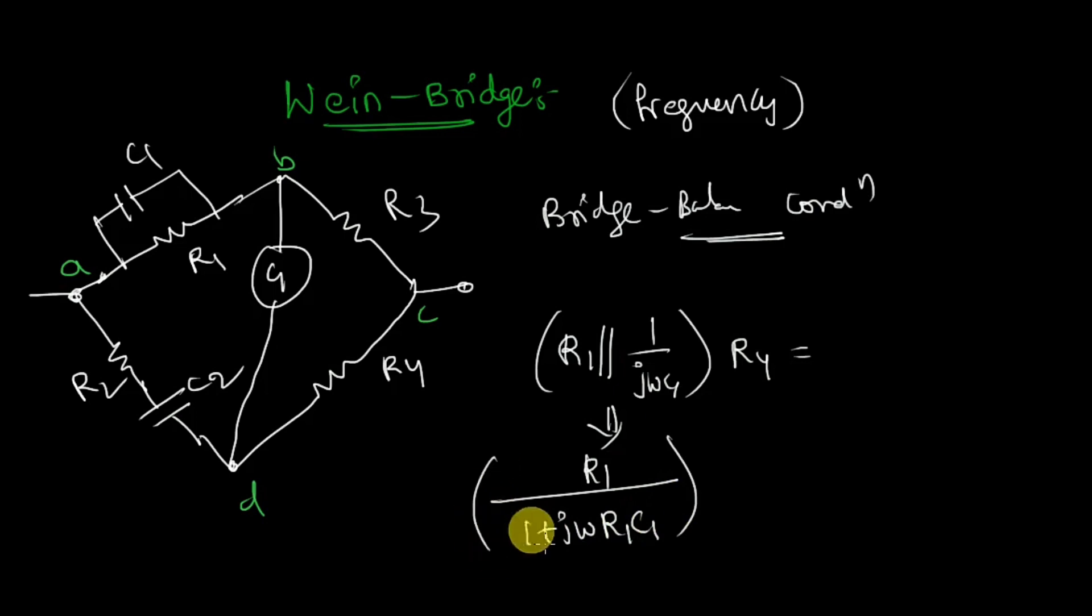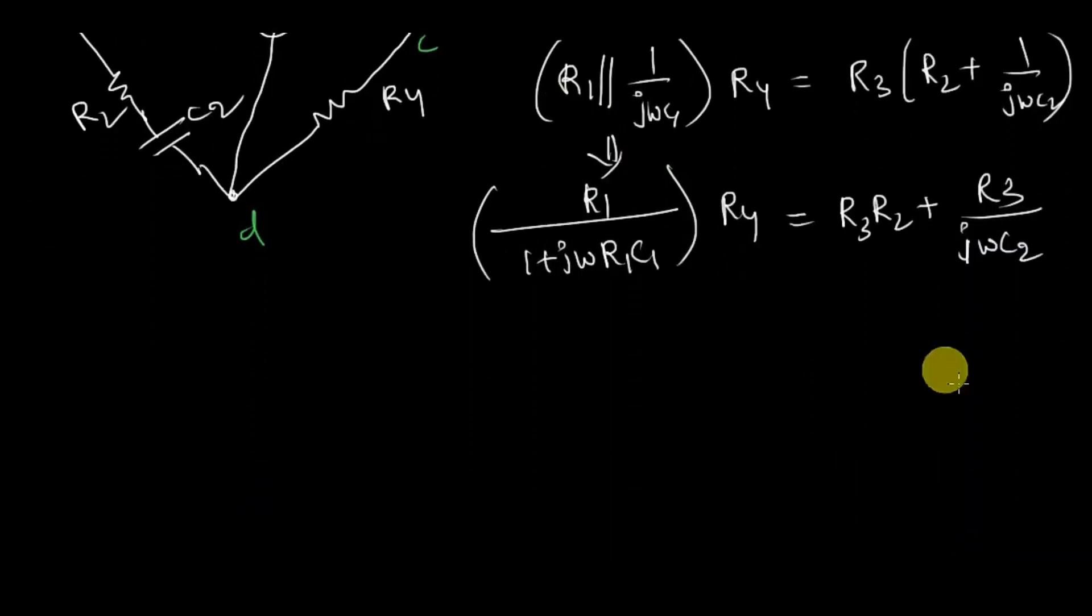The RHS part will be R3 into R2 plus 1 by j omega C2. If you expand this you will get R3 R2 plus R3 by j omega C2. Now let me expand this: R1 R4 by 1 plus j omega R1 C1, which is equal to R3 R2 into j omega C2 plus R3 by j omega C2.